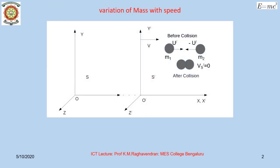Let us consider two reference frames, S and S'. Let the frame S' move with a speed V along the positive x-axis. The y and z-axes of the frames are parallel. Consider a collision between two bodies, 1 and 2, of masses M1 and M2 respectively, moving in opposite directions with equal magnitudes of velocity U' in the frame S'.